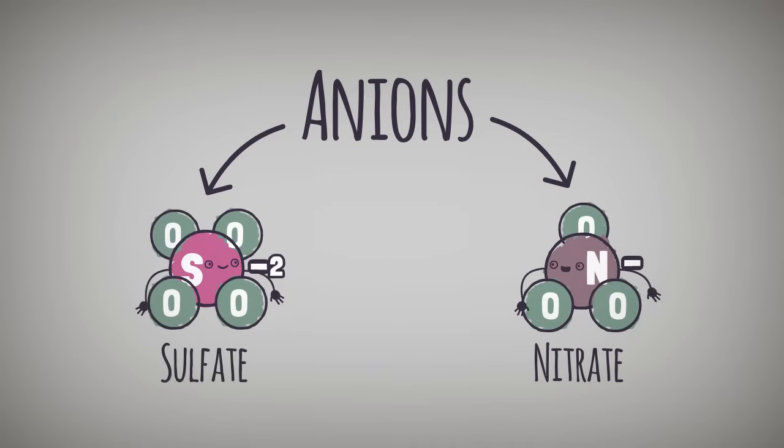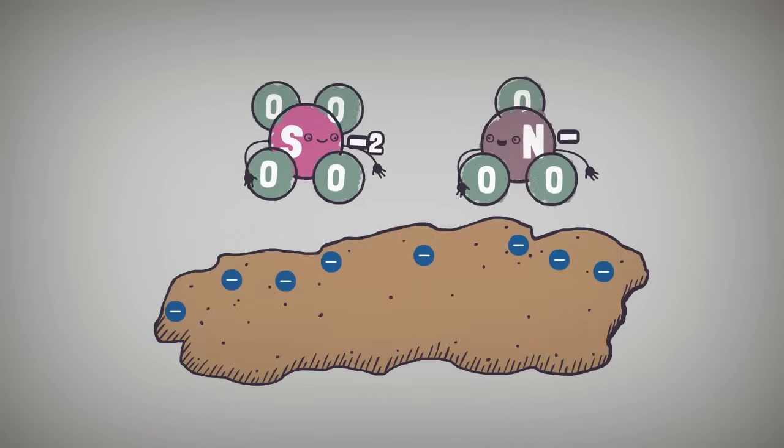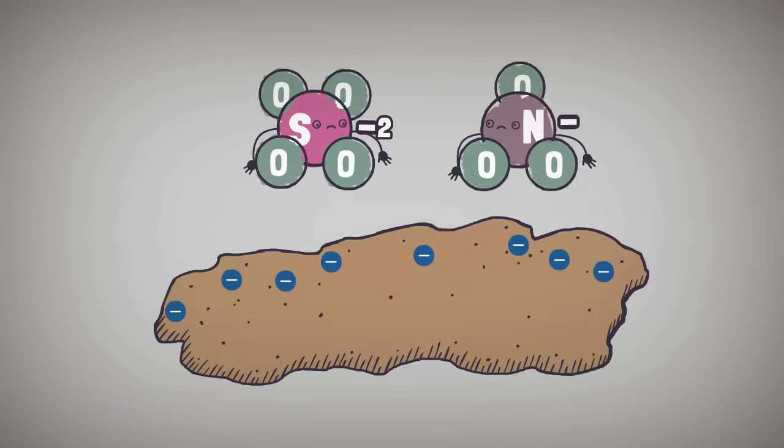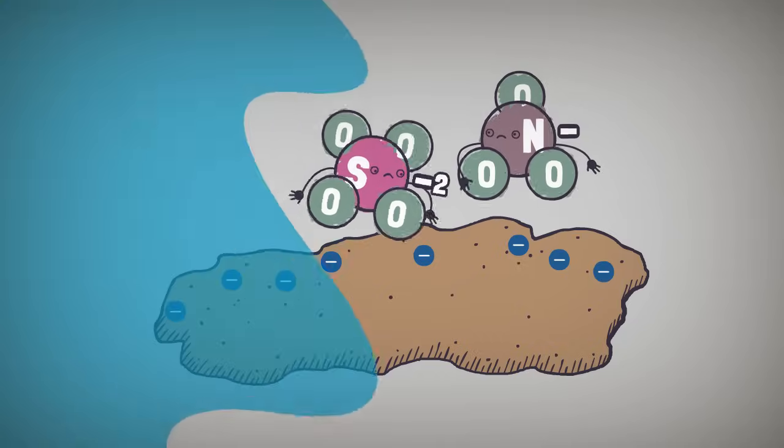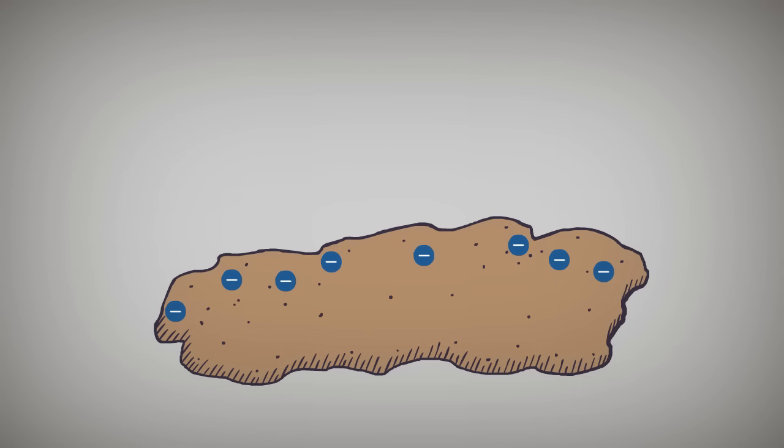Since anions, like nitrate or sulfate, have a negative charge, they are unable to attach themselves to negatively charged particles and, as a result, leach out when watered.